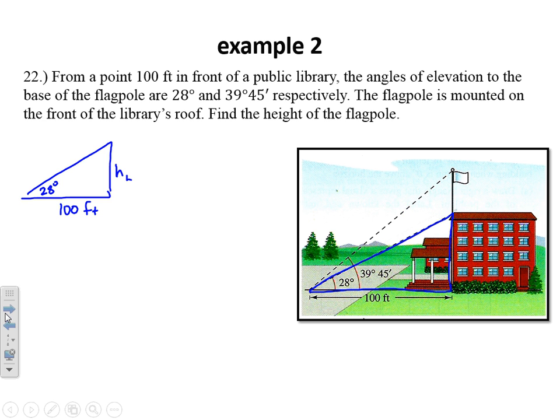And then we got the second right triangle that goes to the top of the flagpole. That is 39 degrees 45 minutes. We better change that into decimal degrees so we can more easily use our calculator. 45 minutes is three quarters of a full degree. There's 60 minutes in a full degree. So 39.75 degrees is how I'm interpreting that. Still the same 100 feet along the ground, but now I got the height with the flagpole included. So I'm going to call that H sub F. If I take the difference in H sub F and H sub L, I'll find the height of the flagpole.